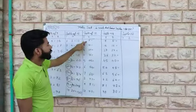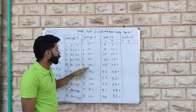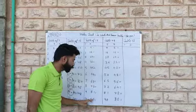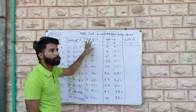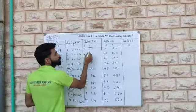That is 9, 18, 27, 36, 45, 54, 63, 72, 81, 90. This is the table of 9. Now what we need to do.